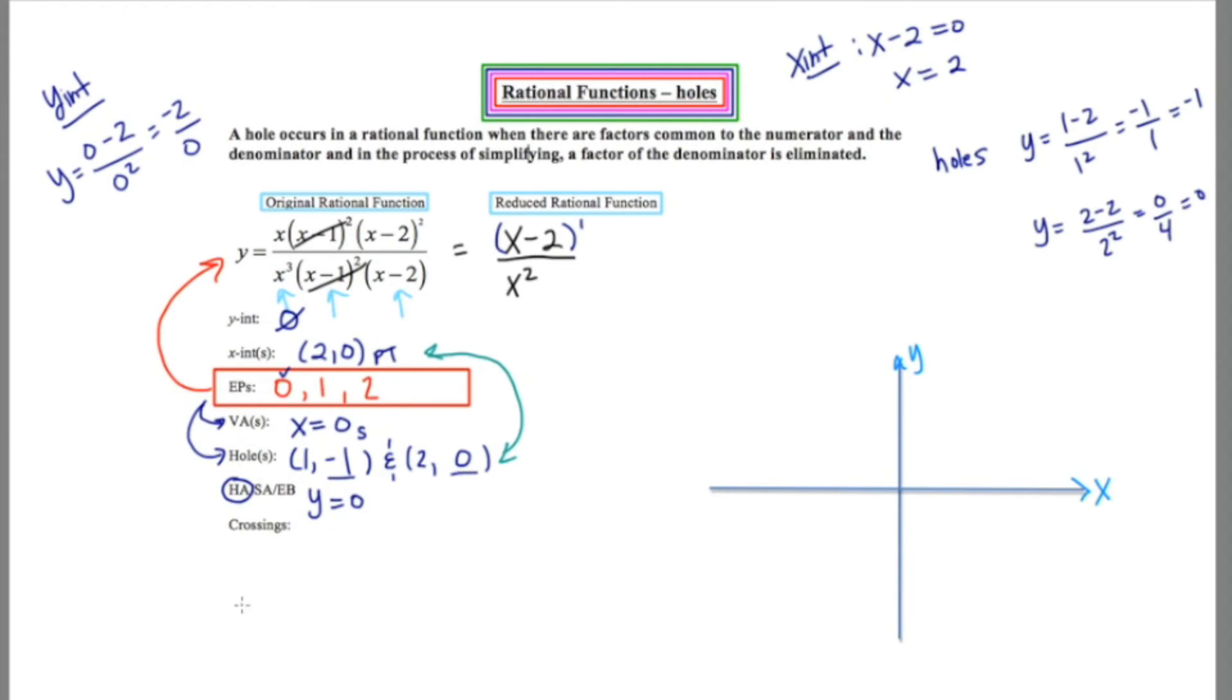Now, for crossings, we're going to set our reduced rational function equal to our HA. So (x - 2) over x squared equals zero, or zero over one. Cross multiplying, we get (x - 2) equals zero. And subsequently, x equals two.